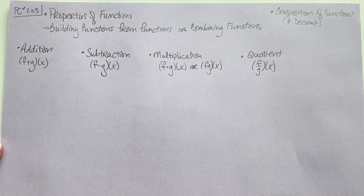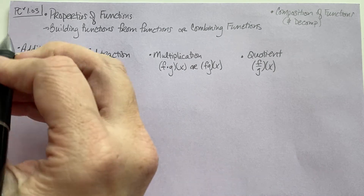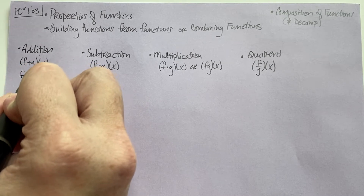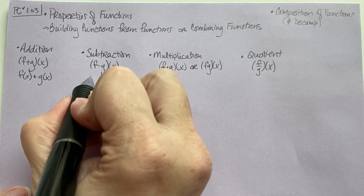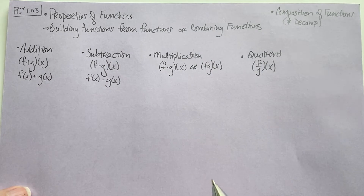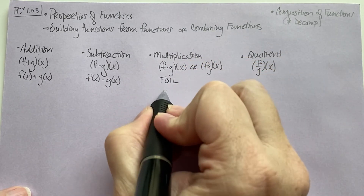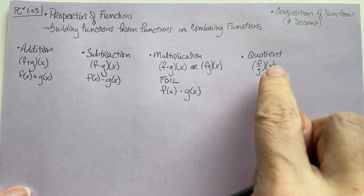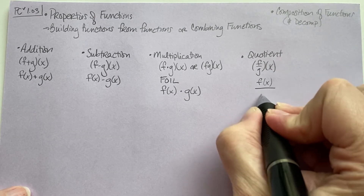The first property we're going to talk about is addition. It looks like this: f plus g of x, and it's basically just adding the two functions together, so f of x plus g of x. Subtraction is the same — f of x minus g of x. Multiplication uses FOIL because it will be f of x times g of x. And then the quotient rule will just be f of x divided by g of x.